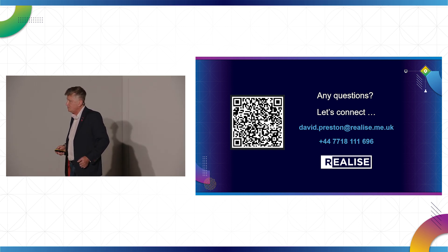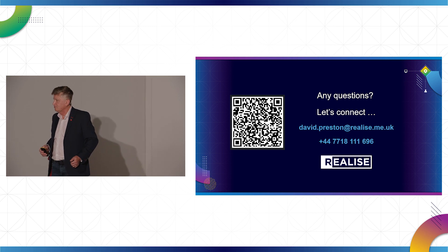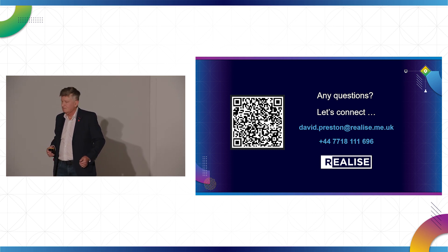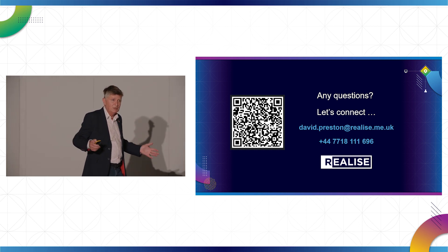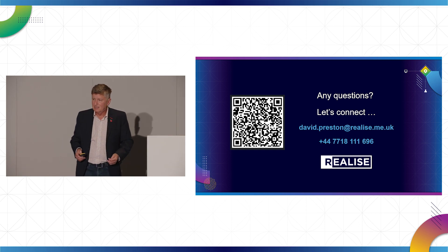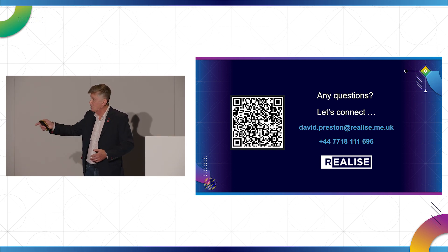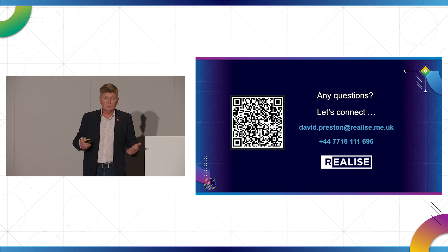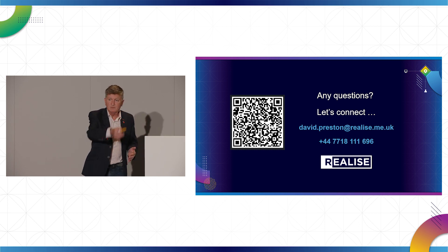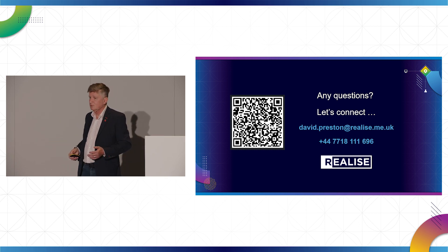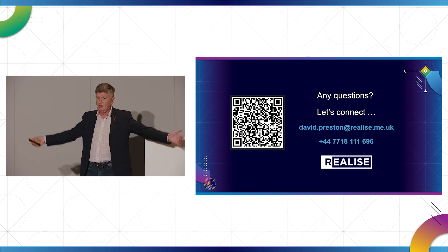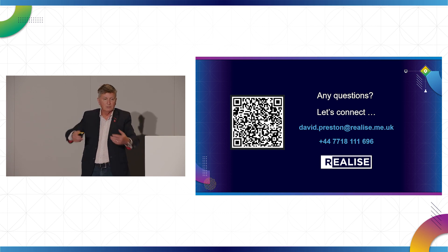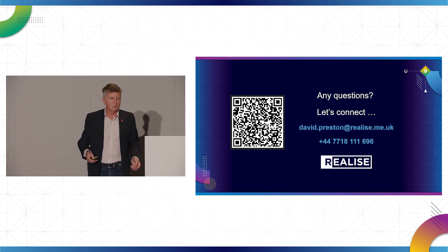Next question: how do you get consensus on what data you should capture so that all stakeholders are on the same page? That is a journey you have to go on, because there are so many stakeholders in any event. The key thing is to have a common language — start using BANT with each one of the lines of business you're working with, so everybody works off the same tools and methodology. Then you become the hero because you can put it all together and show the value the event brought to your business.